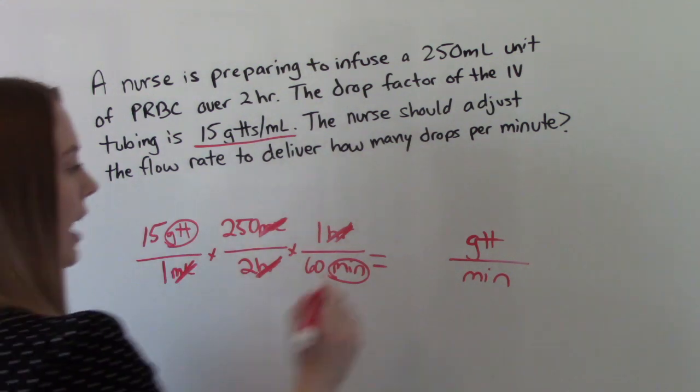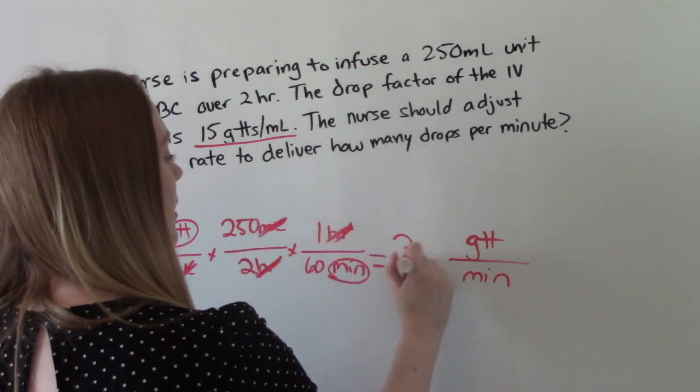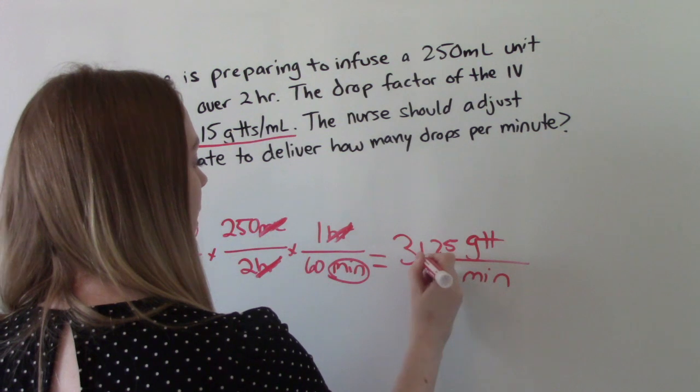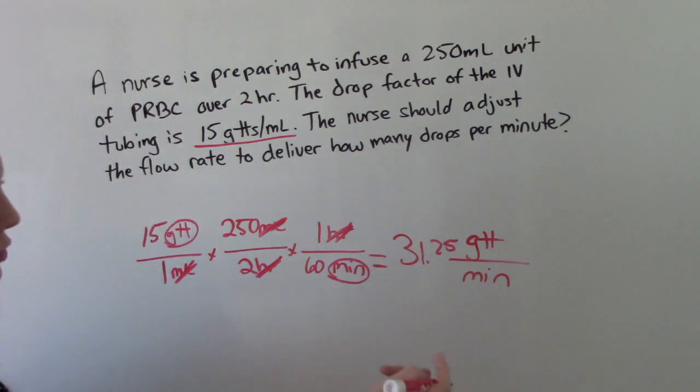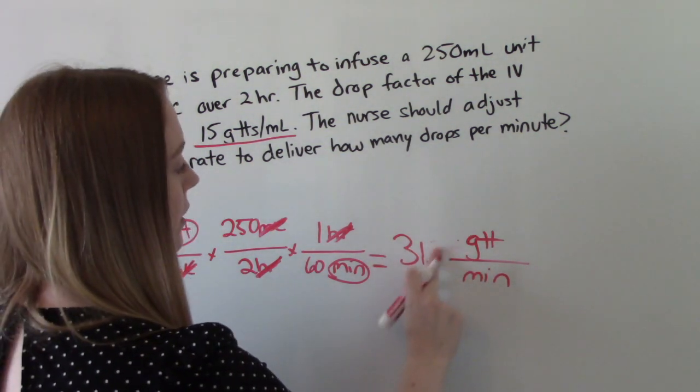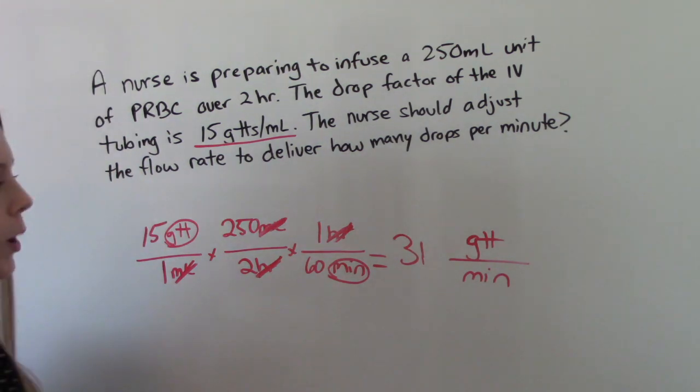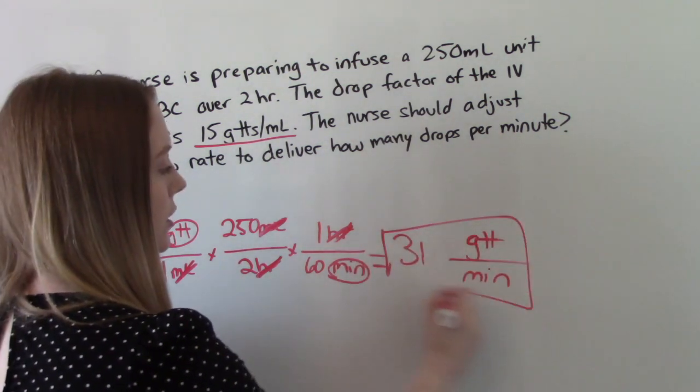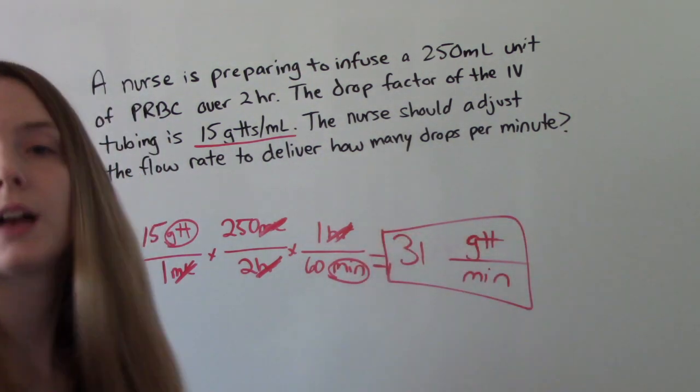Do the math. And you get like 31.25. But we can't give .25 drops. So we'll just round that to 31. So that's our answer for this question. 31 drops per minute.